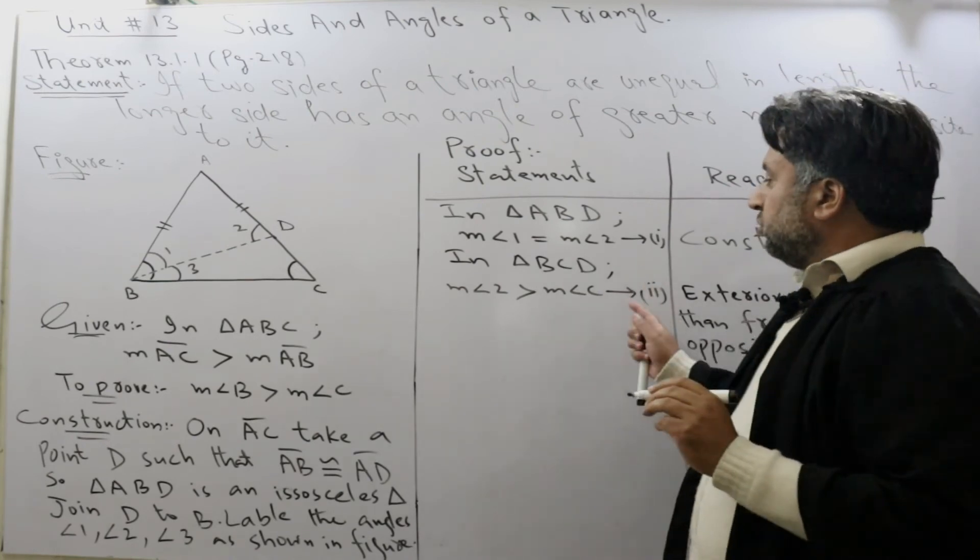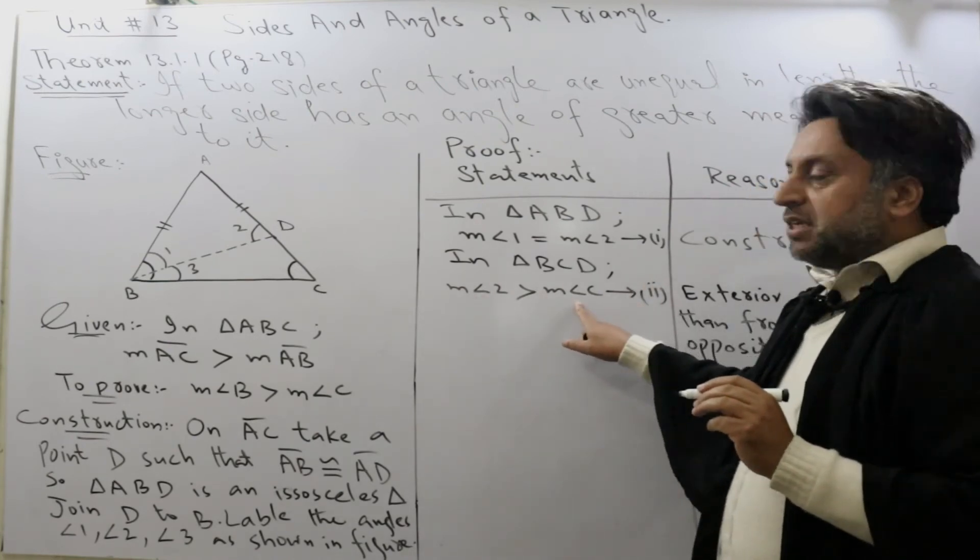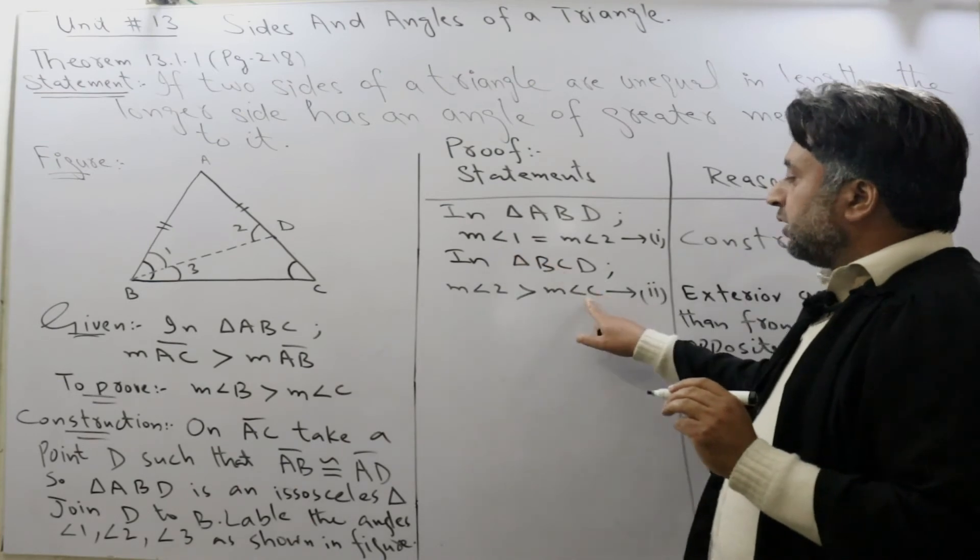Now from 1 and 2, if angle 2 is greater than angle C, it means that angle 1 is also greater than angle C.